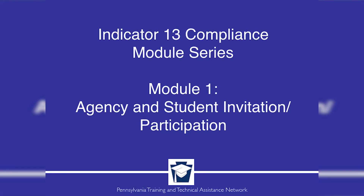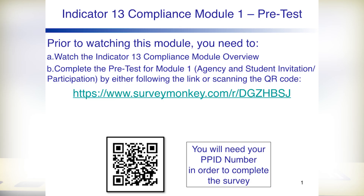Hello and welcome to the Indicator 13 Compliance Module 1, Agency and Student Invitation Participation Pre-Test. At this time, we're asking you to take the pre-test either by clicking on the QR code or typing in the SurveyMonkey URL. Please stop the video at this time and wait to start it until everyone is finished. Thank you.